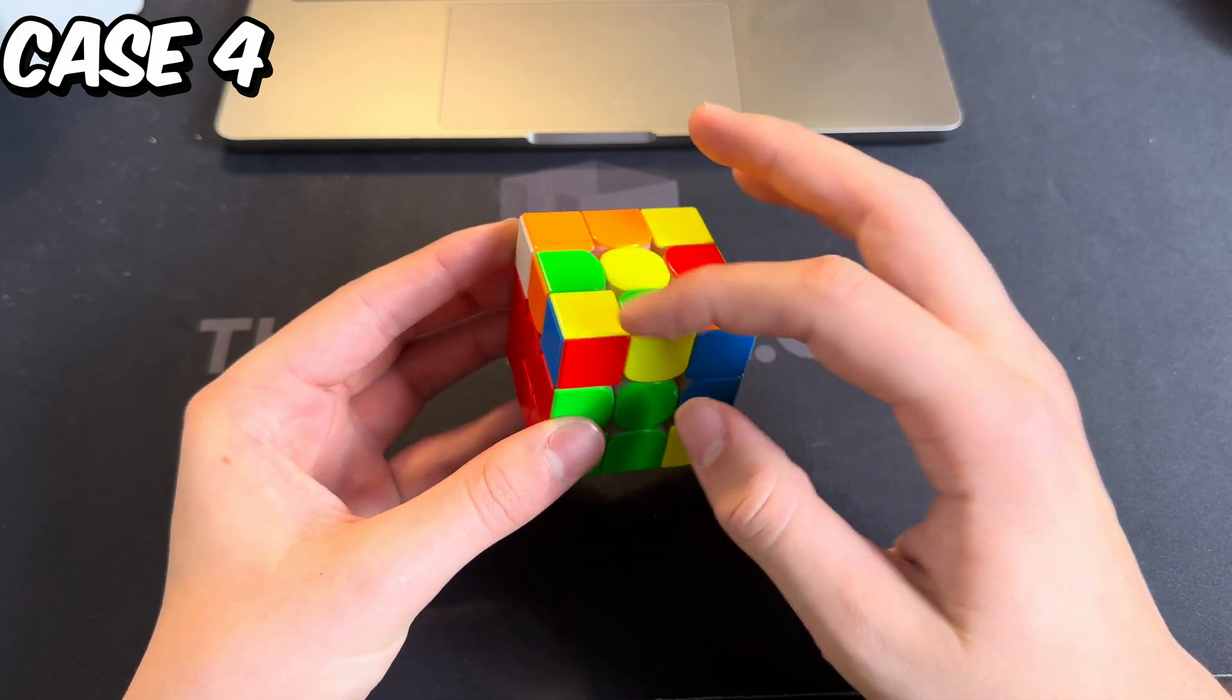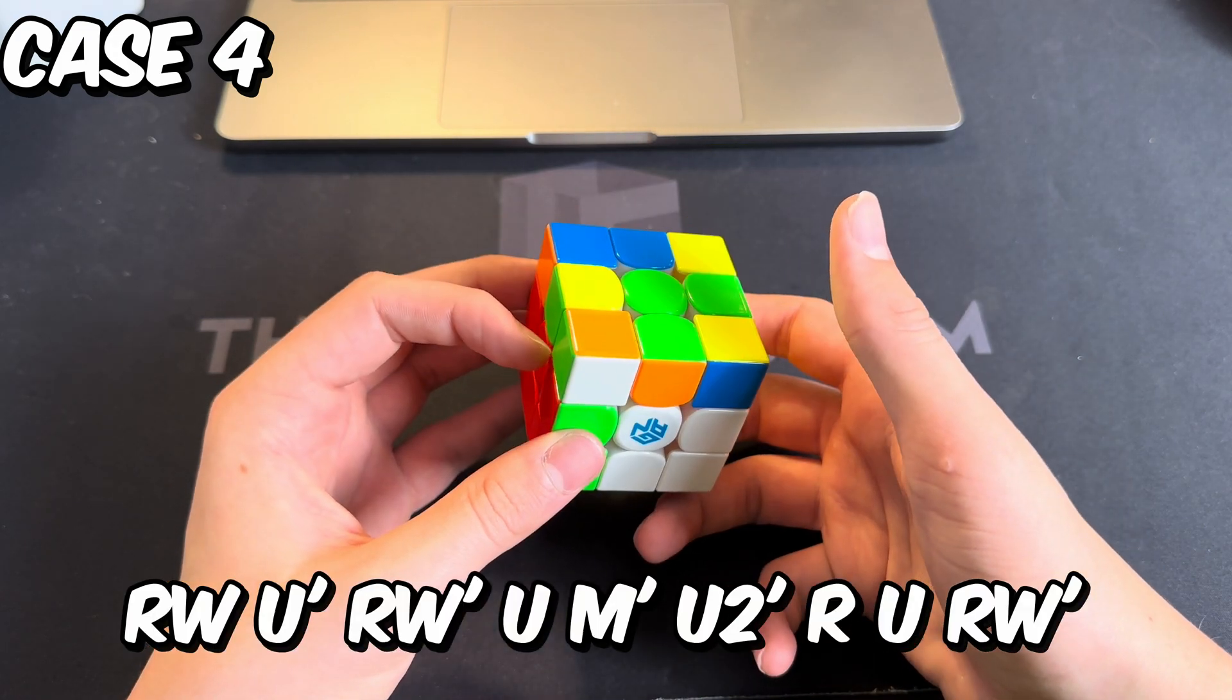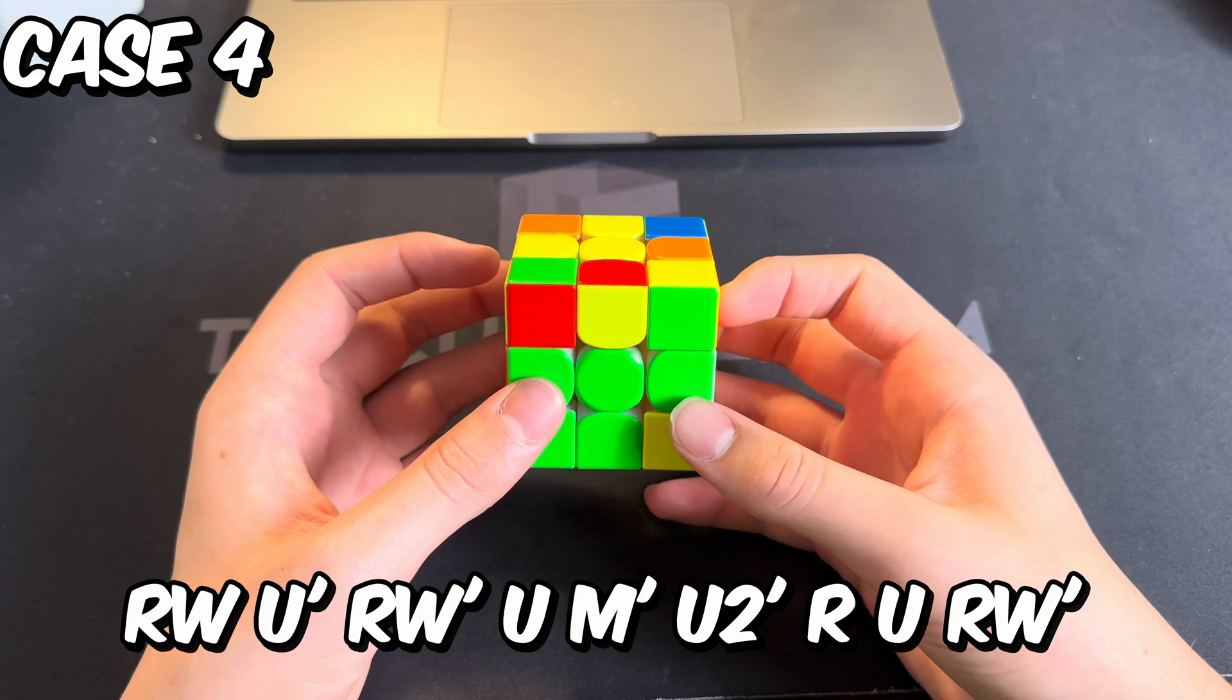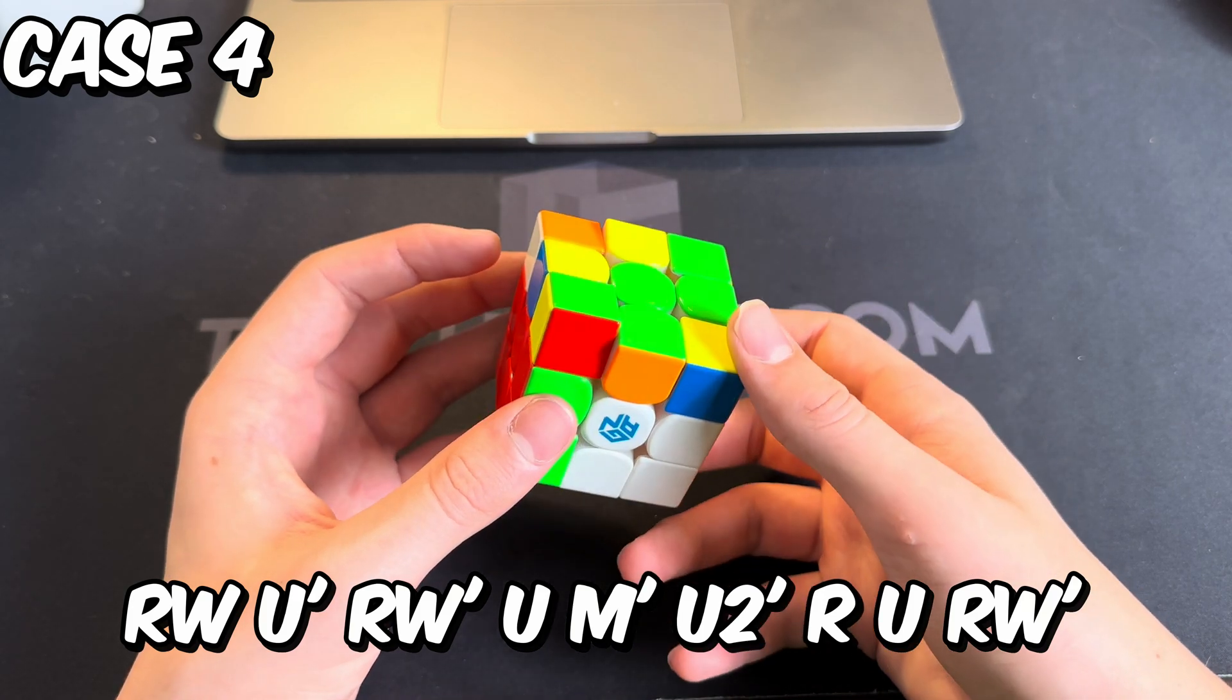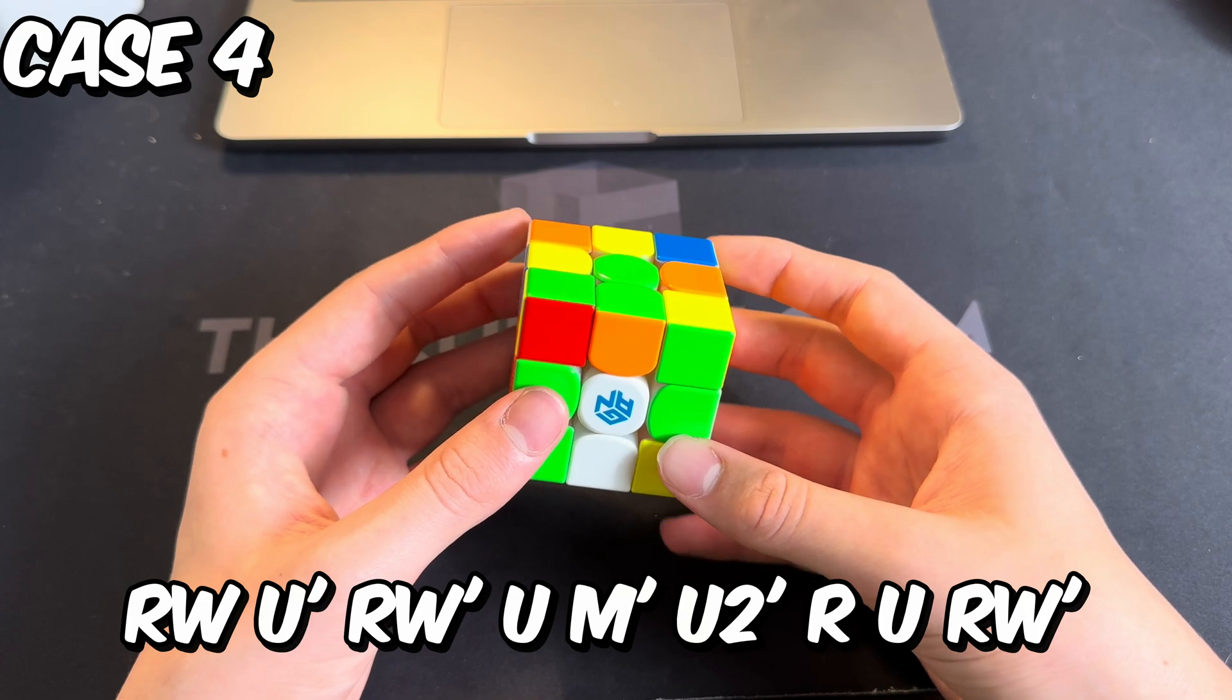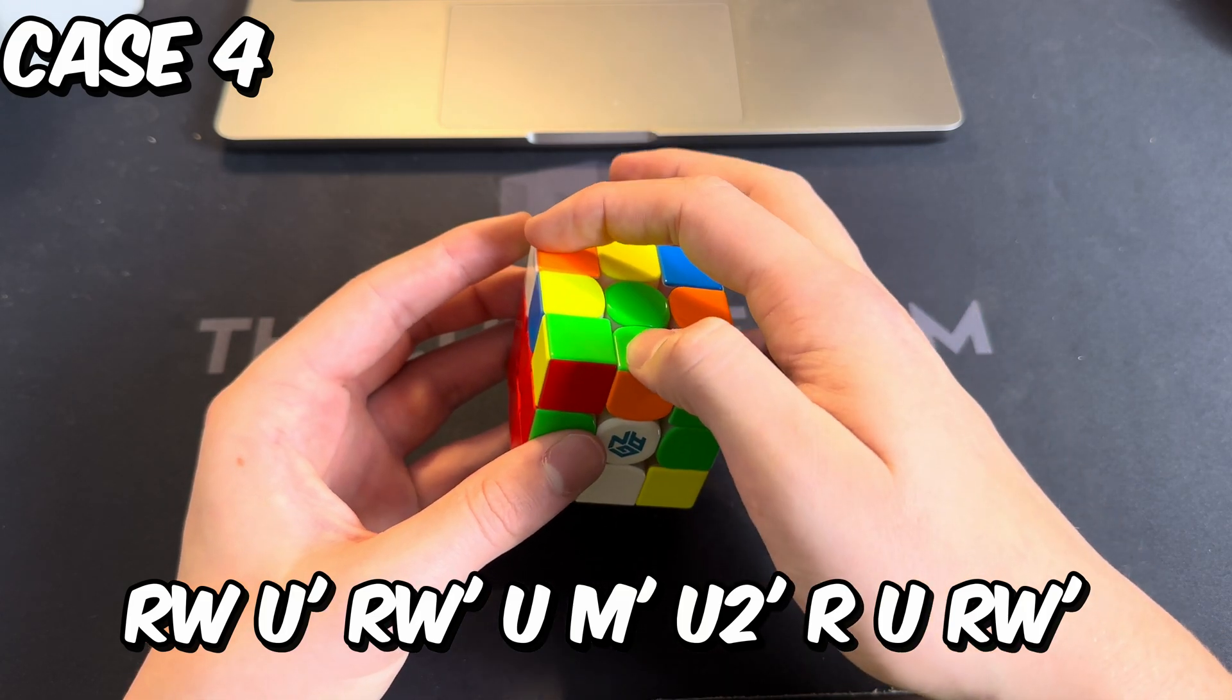You're putting the edge into the bottom like this, doing a U move, then you do an M move except you do wide R then R prime. Now you have this three-mover case which you can insert like this.